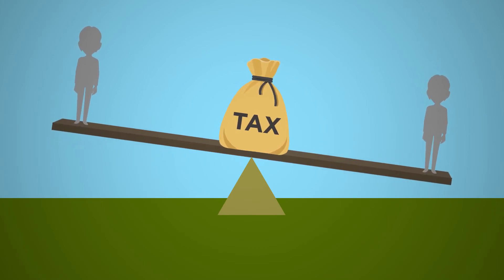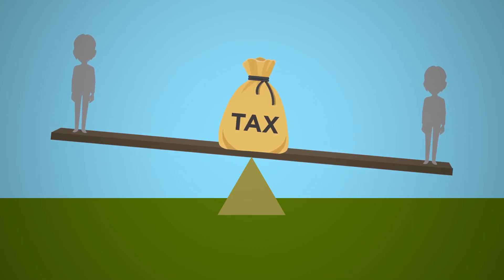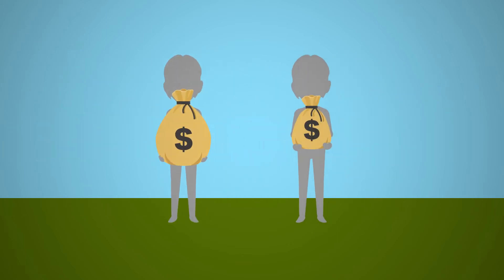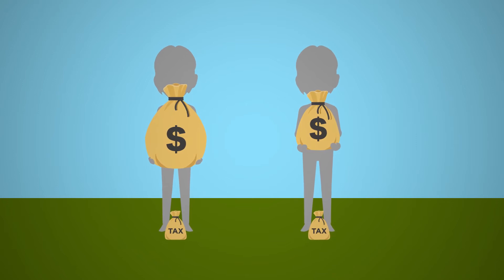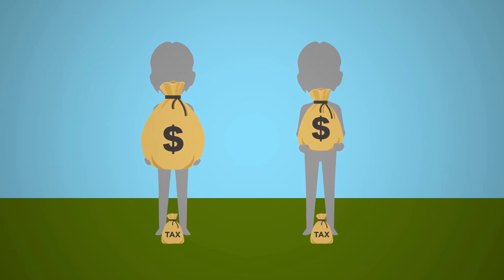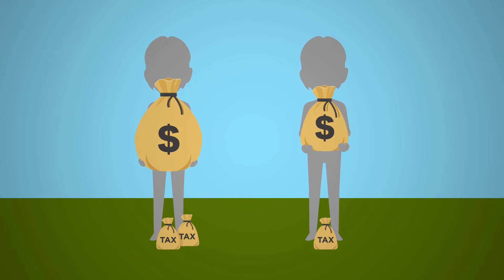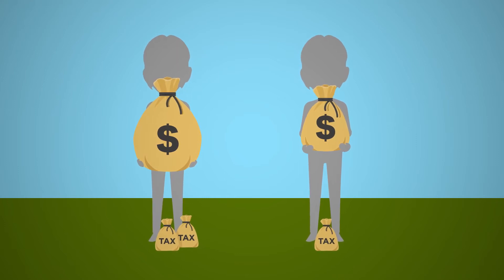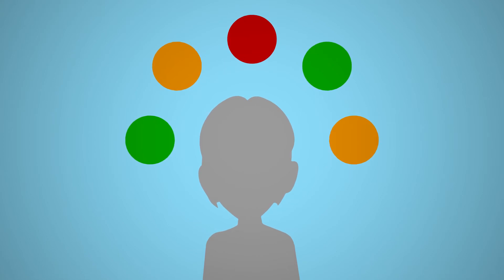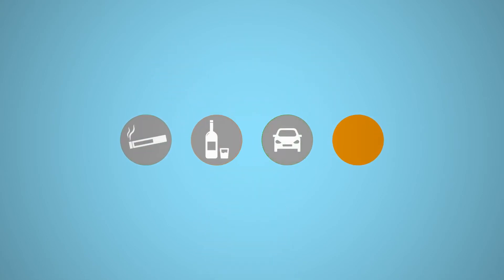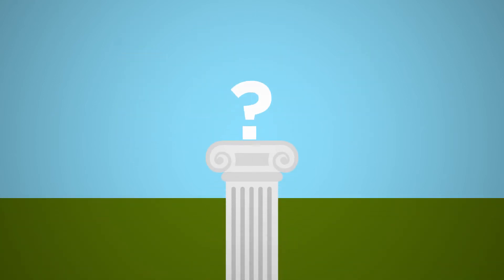Secondly, they can help reduce inequality within countries by redistributing wealth. In some systems, everyone is taxed the same regardless of their means or income, with rich people paying the same portion as poor people. In others, the more you have, the more you pay. Finally, they use tax to influence behaviour by making some options more attractive or affordable than others. They apply this to smoking, drinking, the car you drive and even getting married.